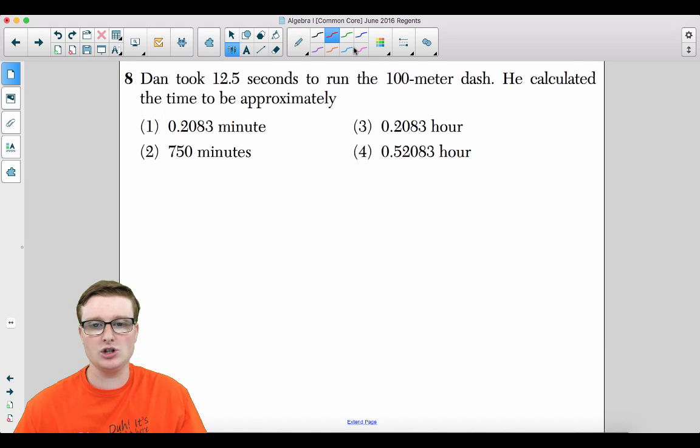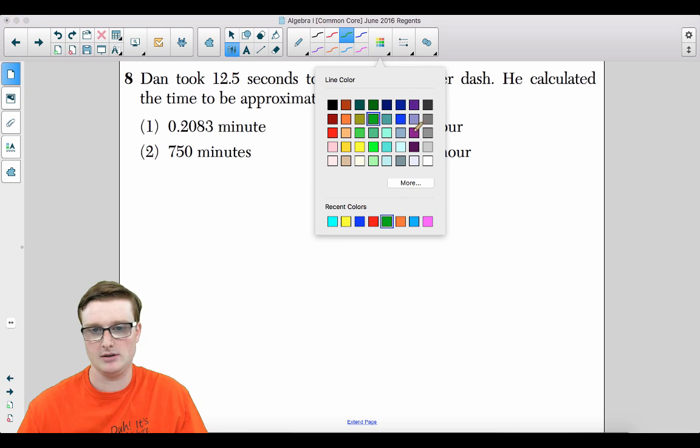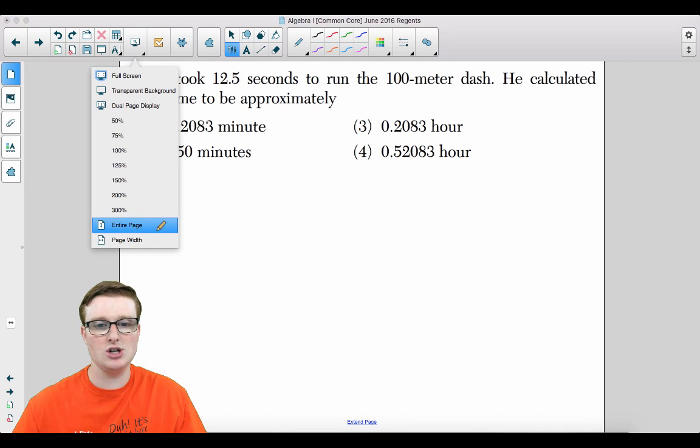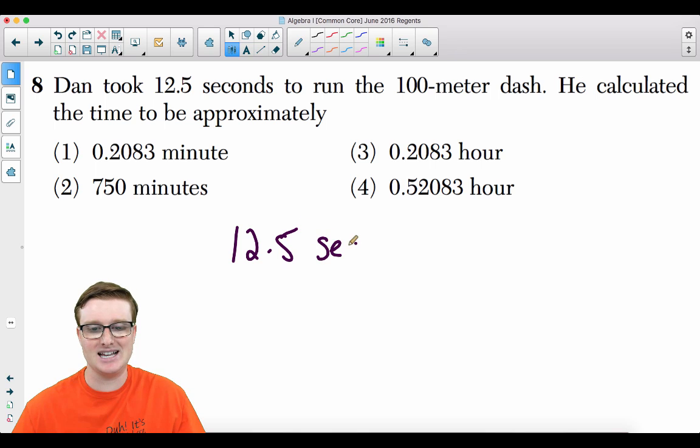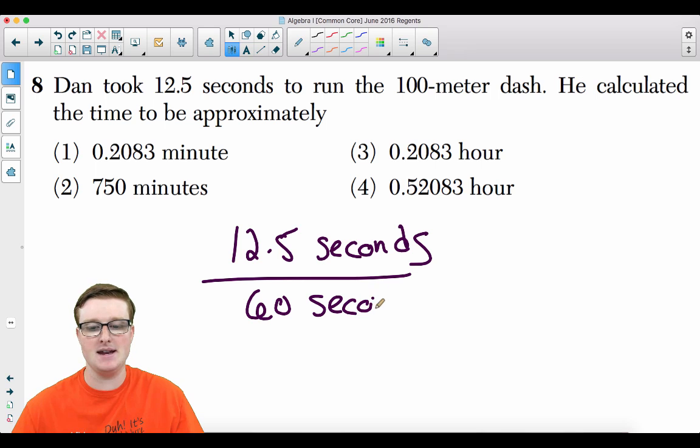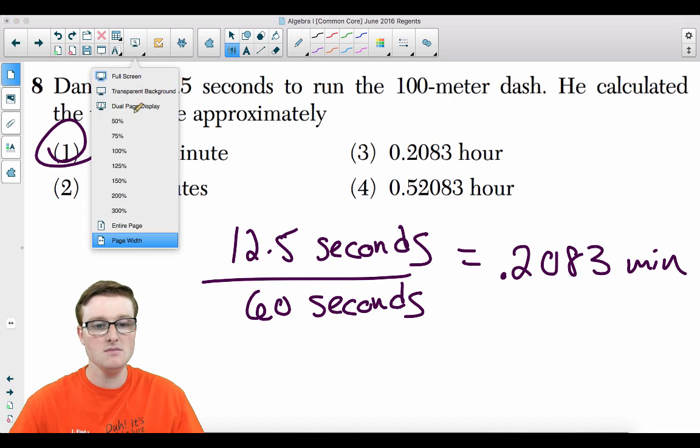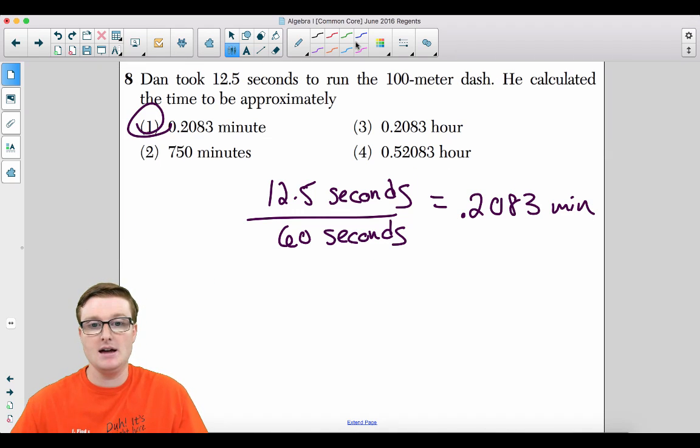Number eight. Dan took 12.5 seconds to run the 100 meter dash. He calculated his time to be approximately what? So you need to know that 12.5 seconds, there are 60 seconds in a minute. When you take 12.5 seconds and divide it by 60 seconds, this actually converts it to minutes. You get 0.2083 minutes. Choice one. And you are done. That's how you convert.